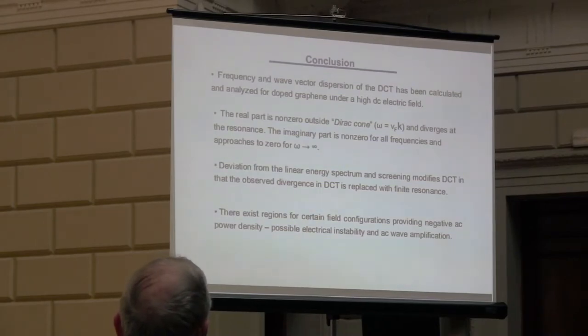In conclusion, we have studied frequency and wave vector dependence of the dynamic conductivity tensor, which has been calculated and analyzed for doped graphene under a high DC electric field. We reveal that the real part is not zero outside the Dirac cone in terms of frequency and wave vector of the AC wave. The deviation of the linear energy spectrum and screening modifies the dynamic conductivity tensor, and then the observed divergence is replaced with finite resonance with finite resonance height. Also we reveal some regions with certain field configurations that provide negative AC power density, thereby we reveal electrical instability and AC wave amplification.